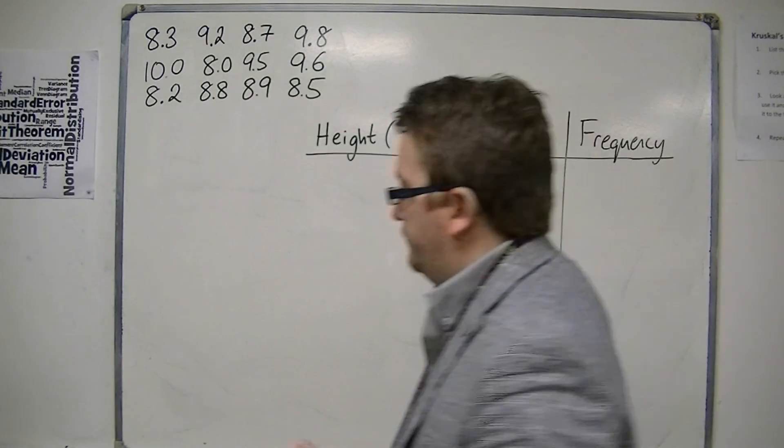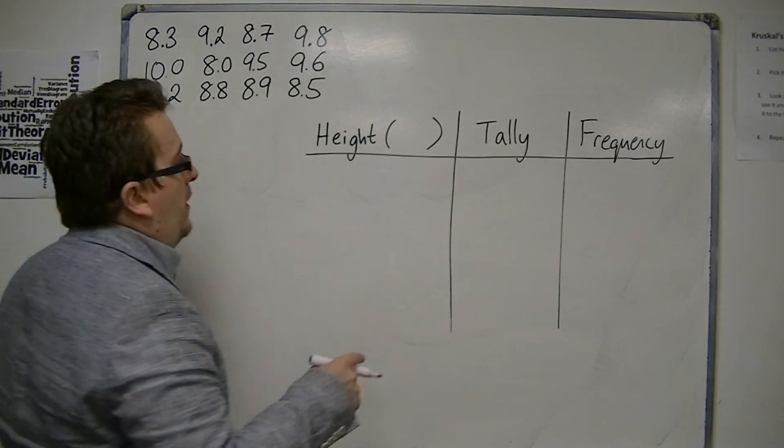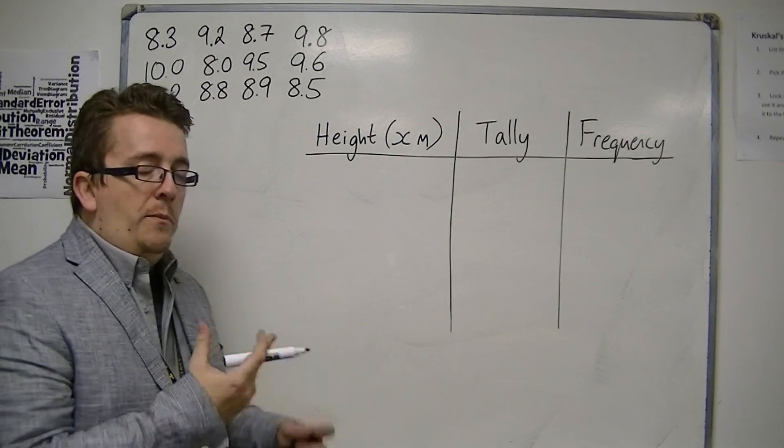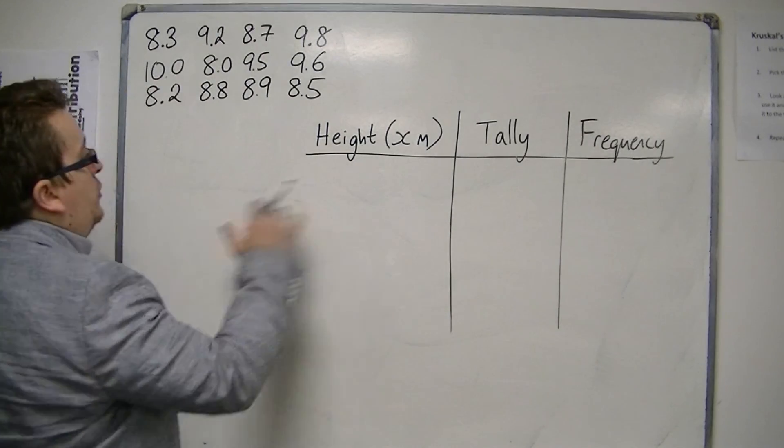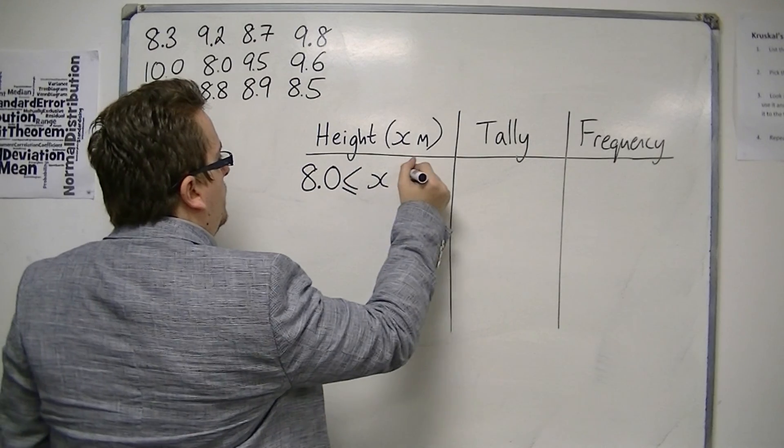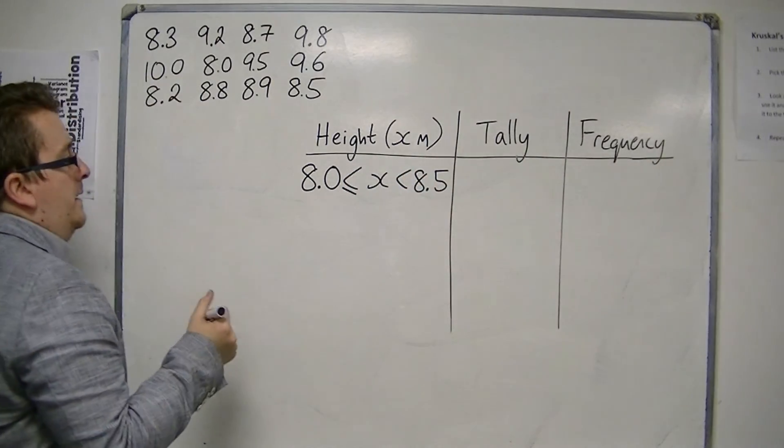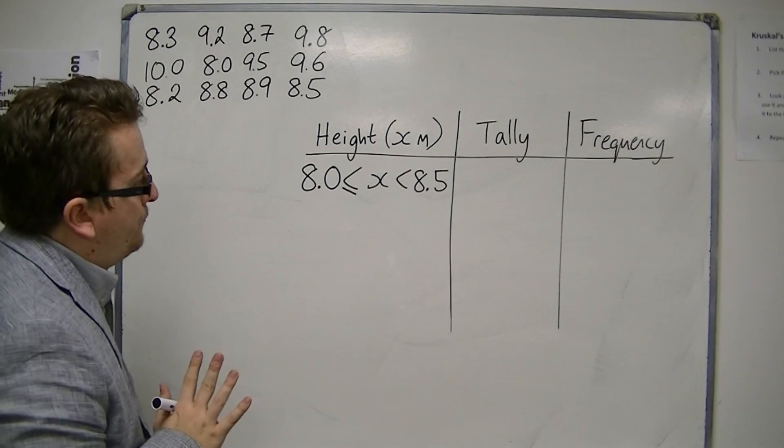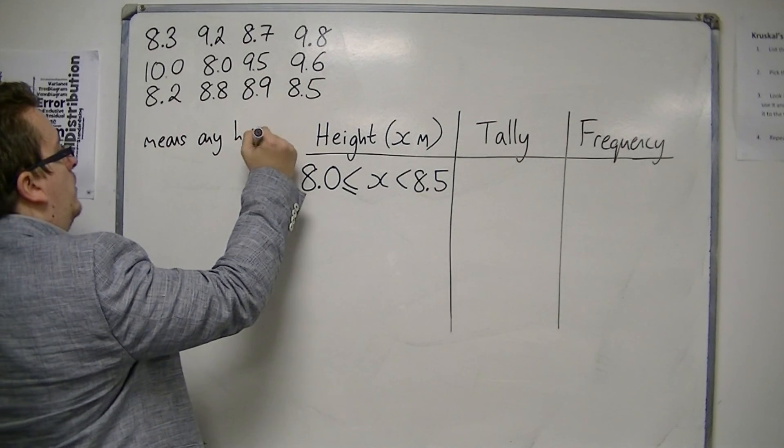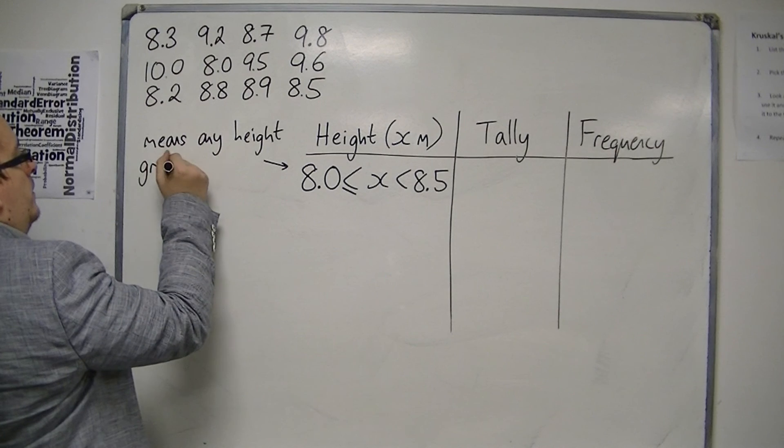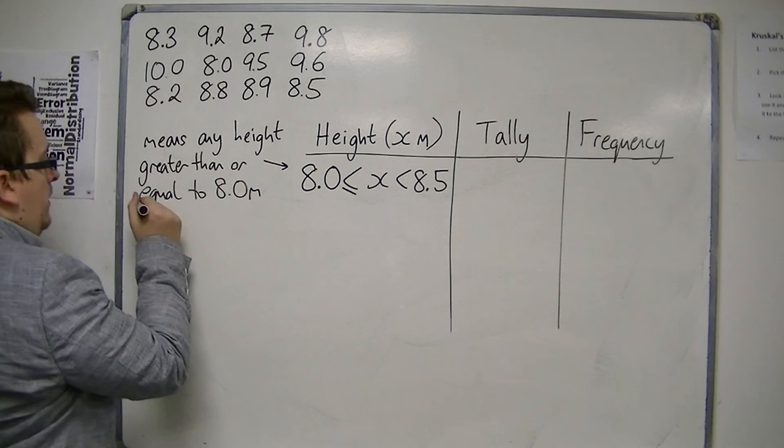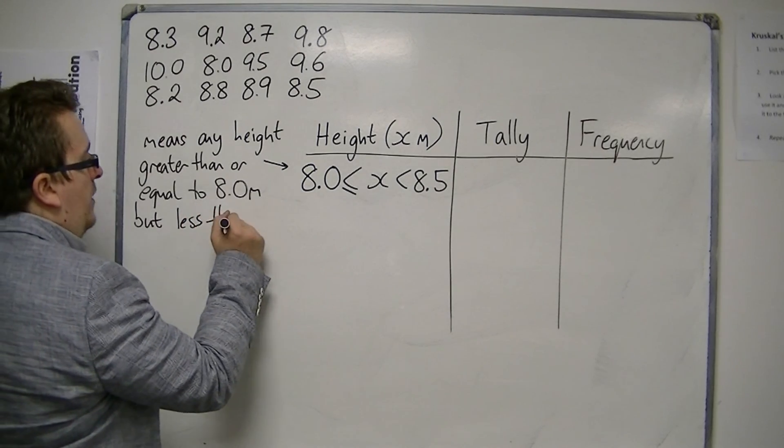So I might form a grouped table. If we say that the height is some x metres, then I could group them by using this method. Now, this is very particular notation. What this means is any height greater than or equal to 8.0 metres, but strictly less than 8.5 metres.